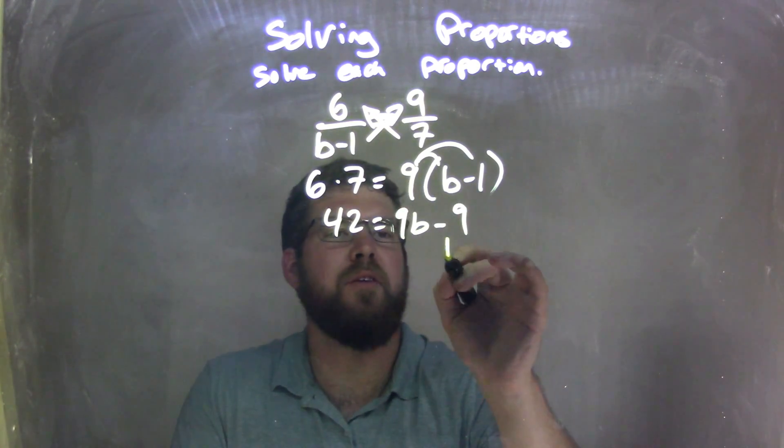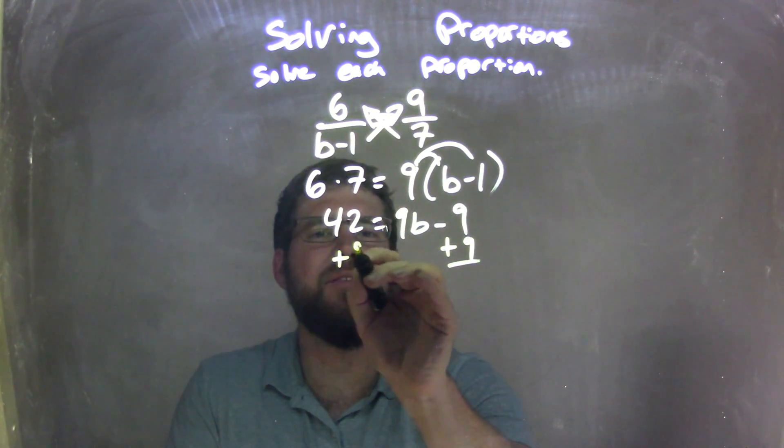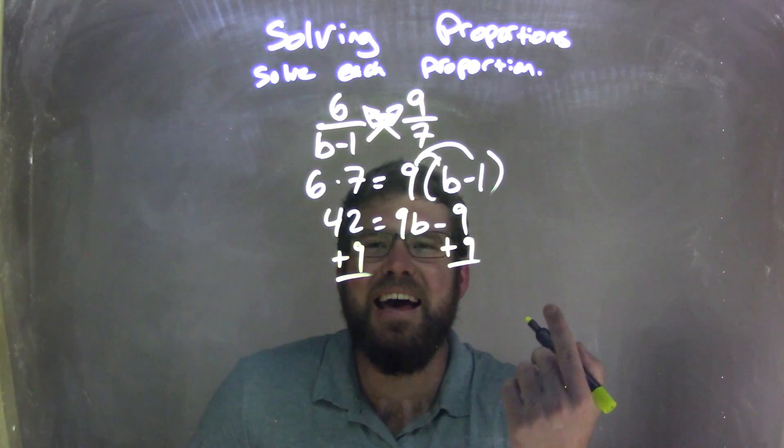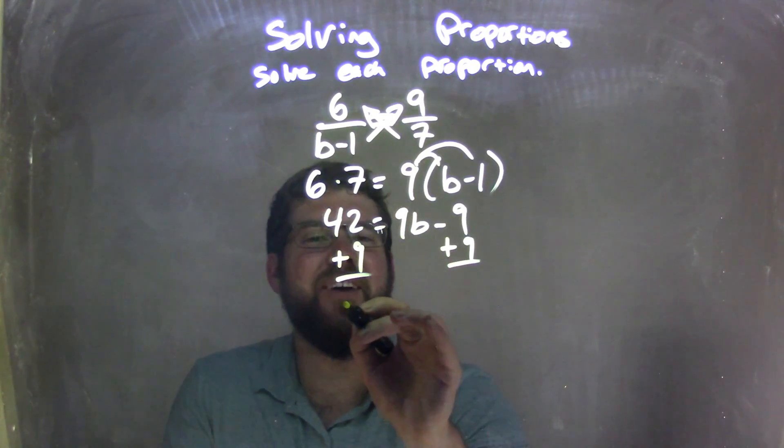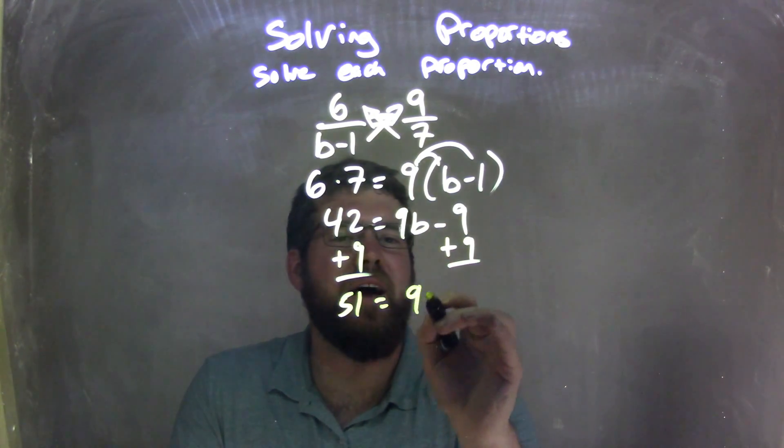Let's bring our like terms together, so I'm going to add 9 to both sides. And adding 9 to both sides gives me 51 here on the left equals 9b.